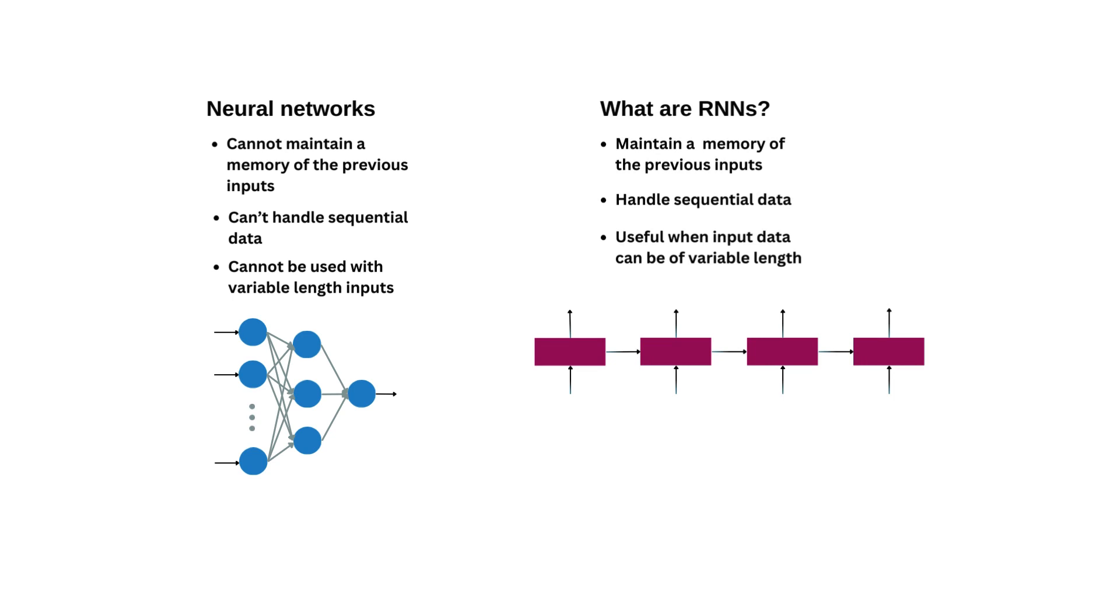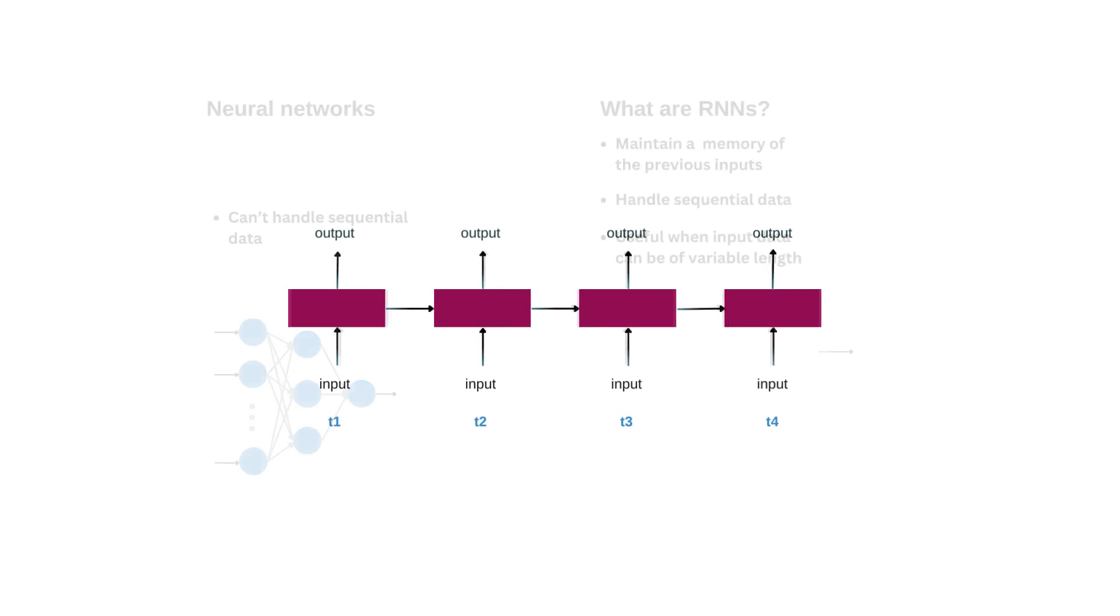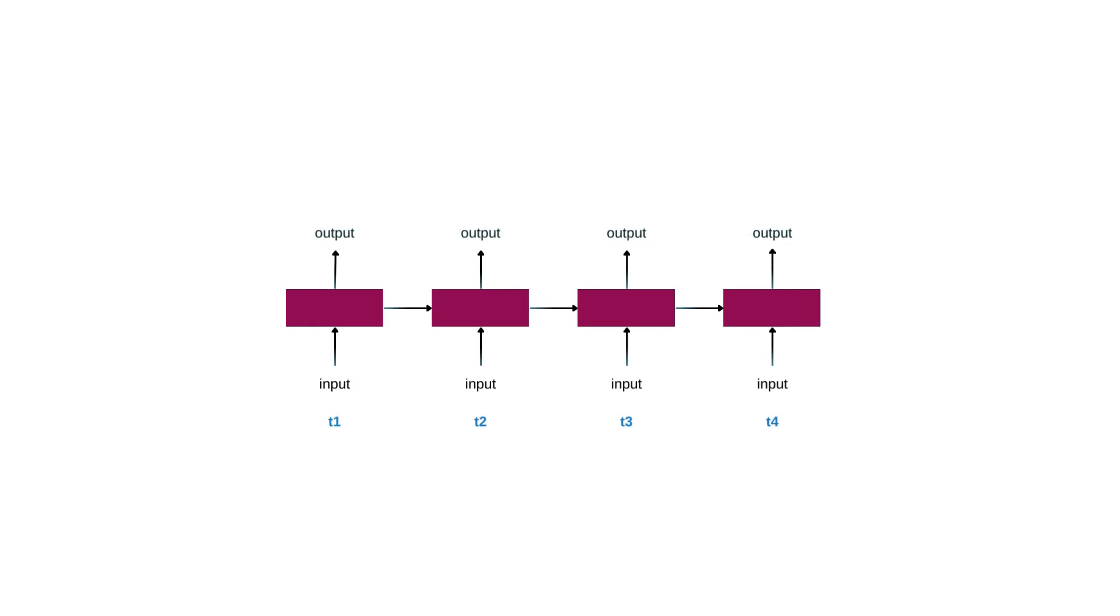An RNN has a memory which takes decision based on previous outputs and the current input. Here, in this diagram, at each time step, an input is given and an output is produced and the same output is given to the same network for the next time step. And thus, using previous output and current input, an output is produced and this process goes on.